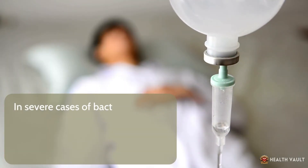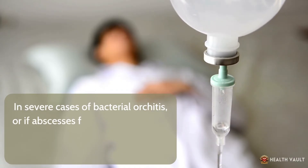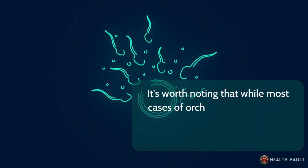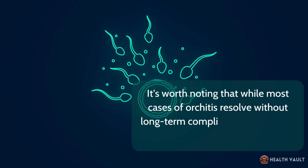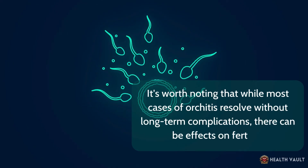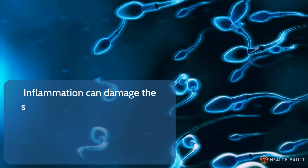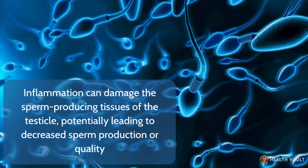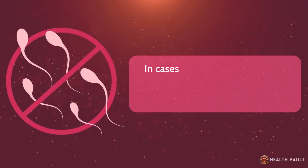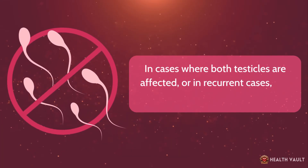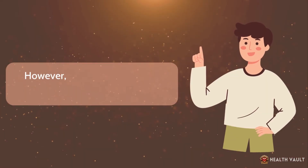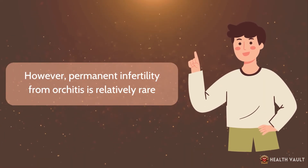In severe cases of bacterial orchitis, or if abscesses form, hospitalization and intravenous antibiotics may be necessary. It's worth noting that while most cases of orchitis resolve without long-term complications, there can be effects on fertility. Inflammation can damage the sperm-producing tissues of the testicle, potentially leading to decreased sperm production or quality. In cases where both testicles are affected, or in recurrent cases, this can sometimes result in infertility. However, permanent infertility from orchitis is relatively rare.